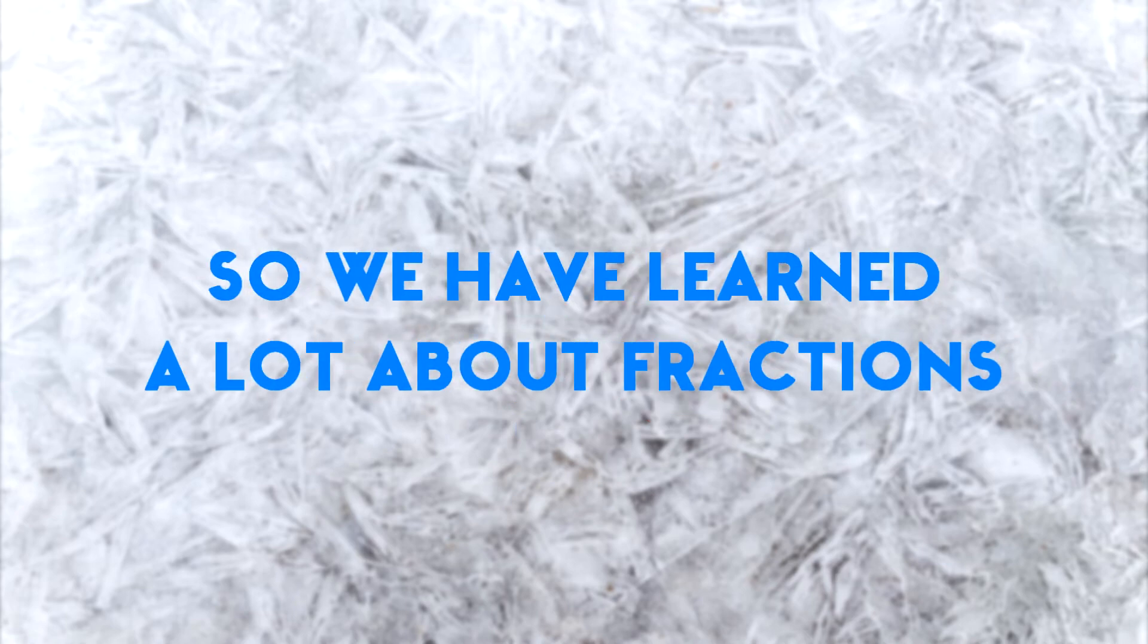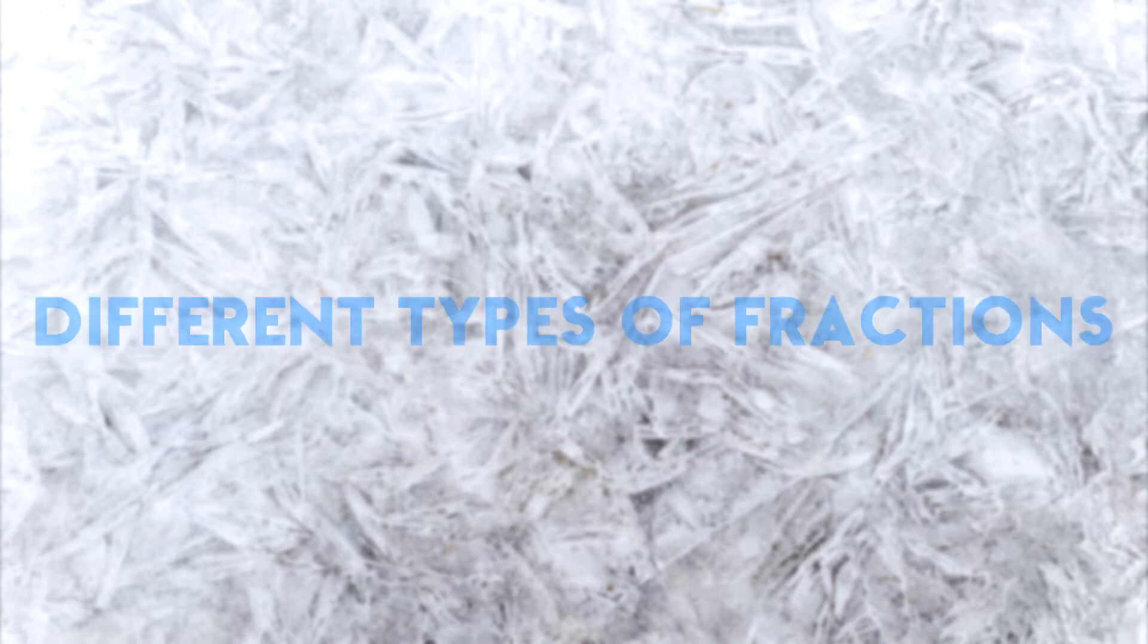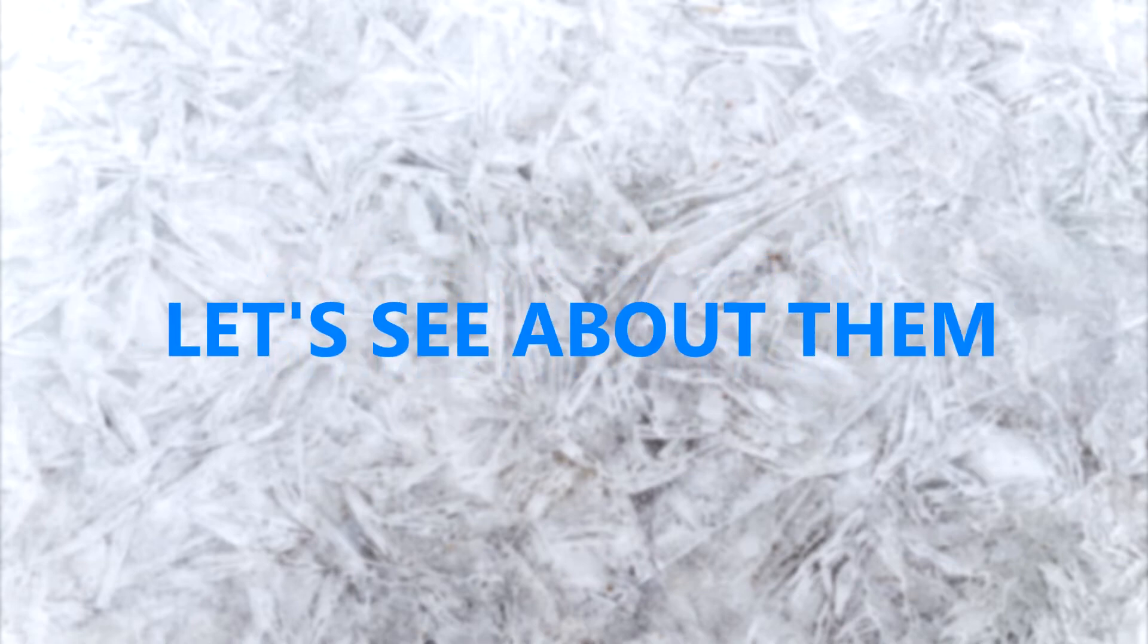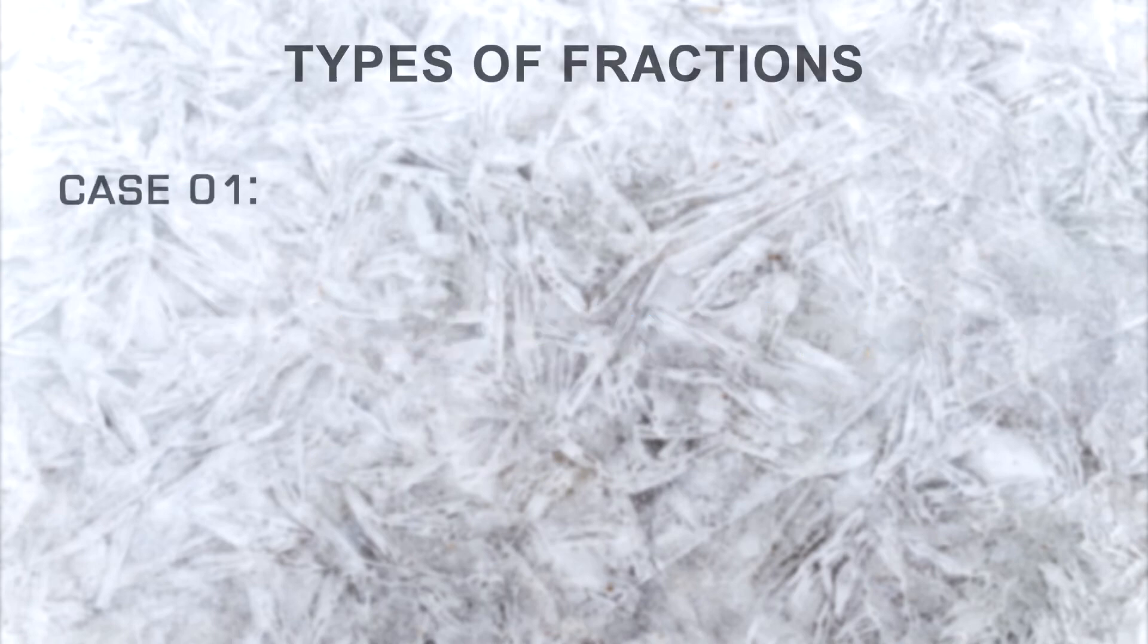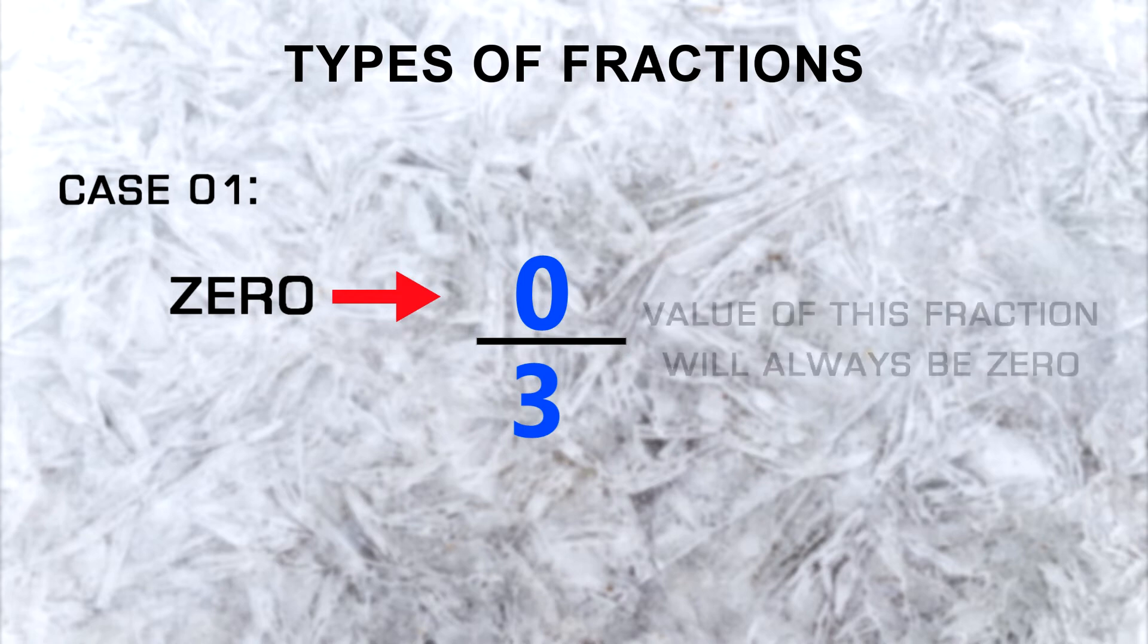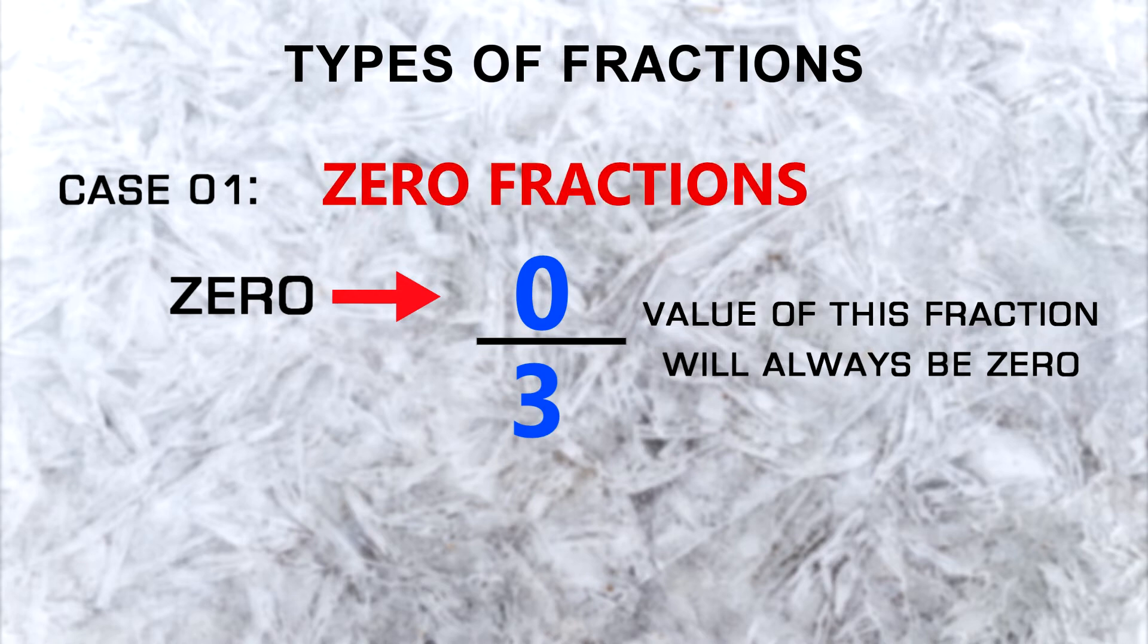So we have learnt a lot about fractions. Now let's see different types of fractions. Fractions are mainly divided into 4 types. Let's see about them. In the first case, if the top value of the fraction is 0, no matter what the bottom number is, for example it is 0 over 3 or 0 over 100, the value would always be 0 for this fraction and we call them zero fractions.